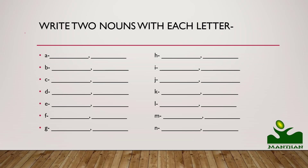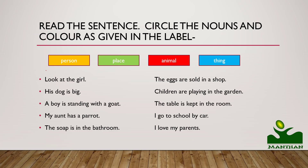This is a longer exercise that will take some time — aapko isko karne mein thoda sa time zyada lagega — but it's okay, you can take some time and think about it. Then write two nouns with each letter. For example, the first letter given is A — aapko A se start hota hua koi do nouns likhna hai, like apple, arrow. B se aapko do nouns likhna hai, jaise ball or bat. So A to Z hai, whatever comes to your mind with that letter, us letter se koi bhi do cheezein ke naam likhna hai.